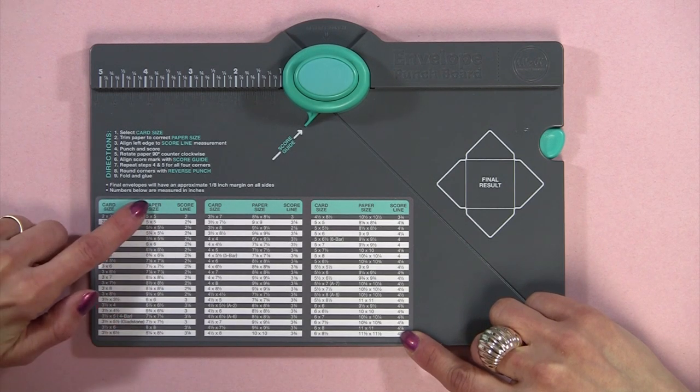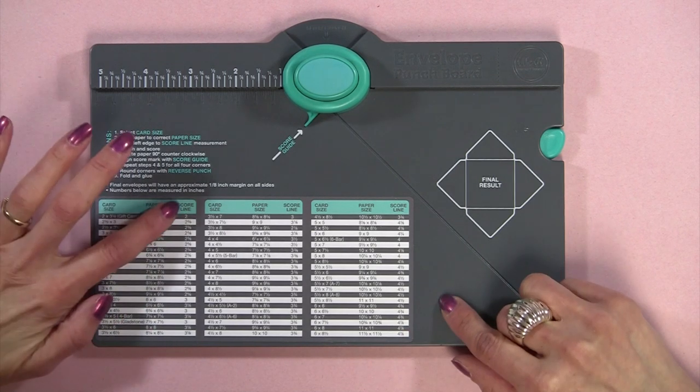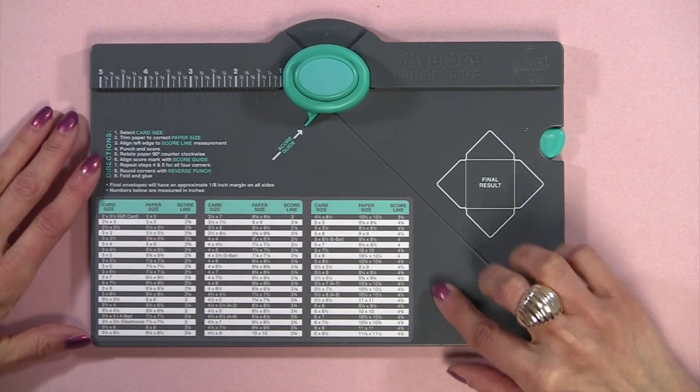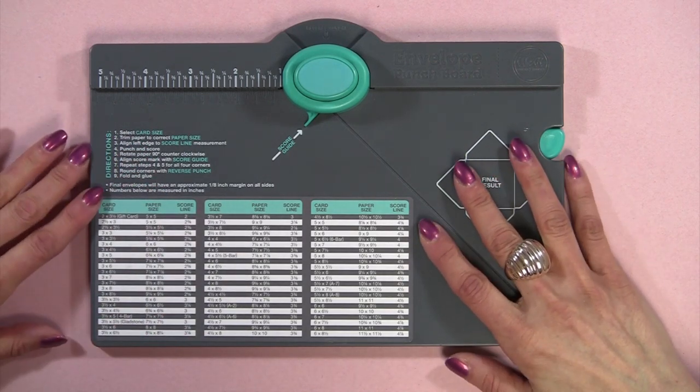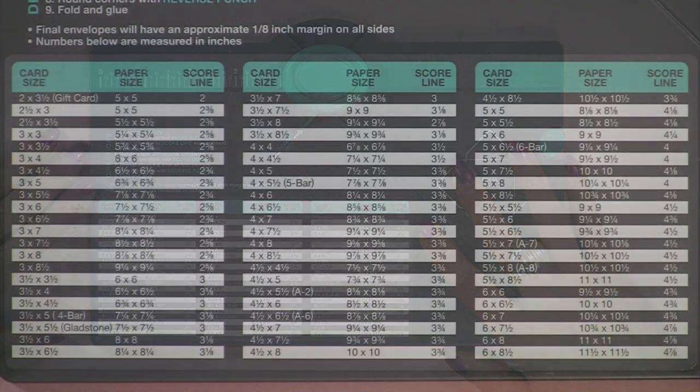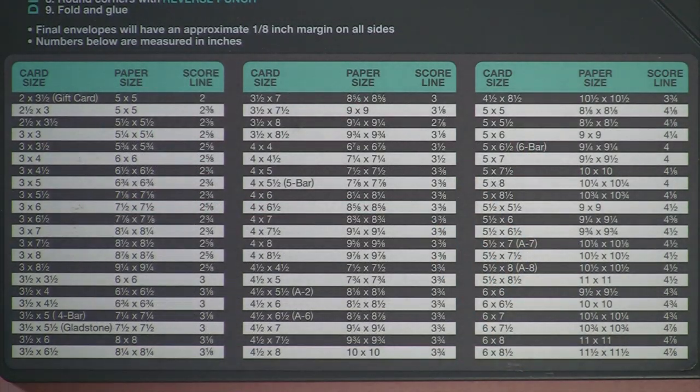There's the card size, the paper size, the score line and I'll tell you what that means. I'll pause for just a second so you can see a close up of the correct dimensions. And if you happen to get one with the wrong sizes that were printed and they don't match these directions, go ahead and go to We Are Memory Keepers website and you'll see a list of the correct sizes as well.